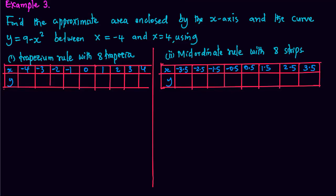We'll look at another example on trapezium rule and mid-ordinate rule. Find the approximate area enclosed by the x-axis and the curve y equals 9 minus x squared between x equals minus 4 and x equals 4 using trapezium rule with 8 trapeziums and mid-ordinate rule with 8 strips.